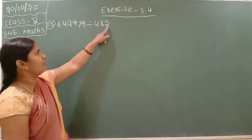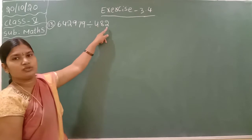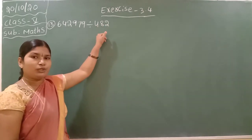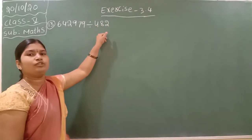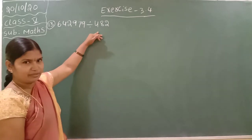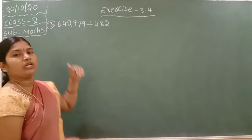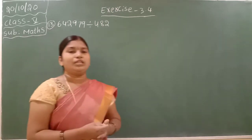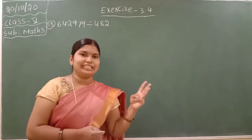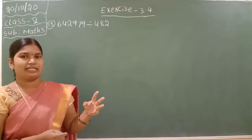Here we are having 1, 2, 3, so it is called a three-digit number. According to the place values we are dividing. It is a three-digit number and it is a six-digit number. Now we will do the six-digit division by three-digit divisor.